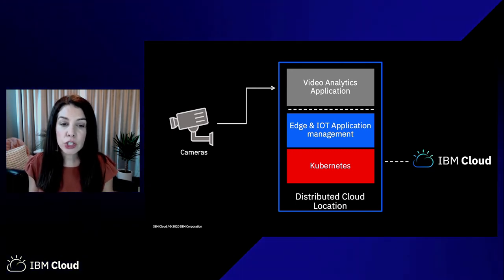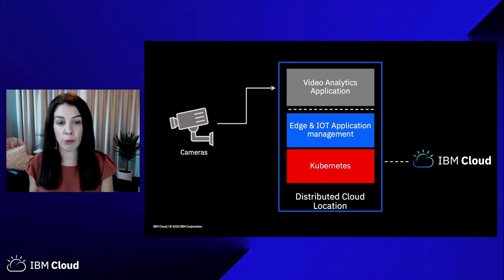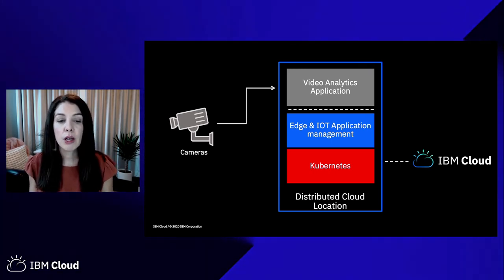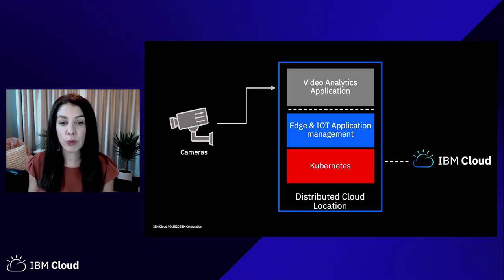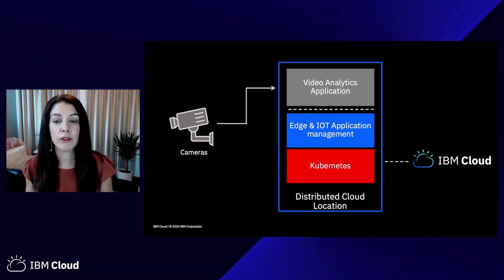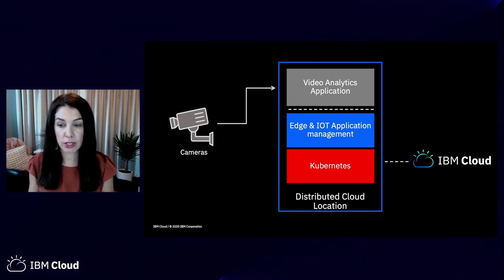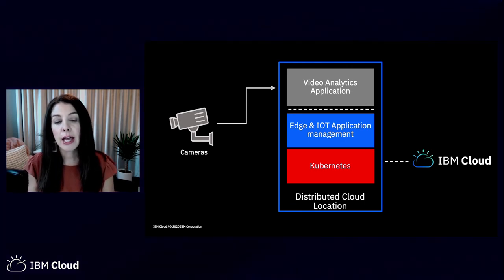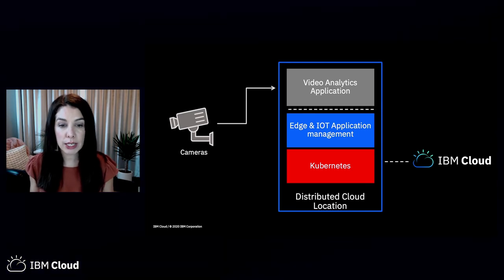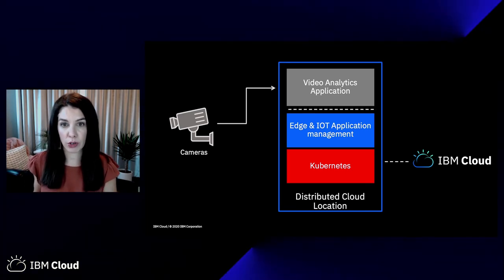Traditionally, to do that, it would require you to install servers and software and manage them on-prem. With Kubernetes and distributed cloud, we can extend the public cloud into the office so we can leverage cloud services to run this application close to the device. That's critical — we can reduce latency and effectively warn someone if they enter a dangerous area.